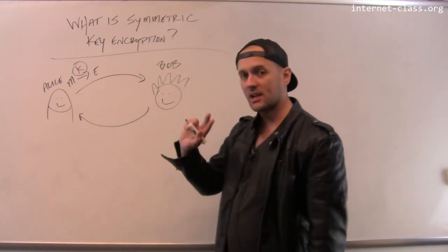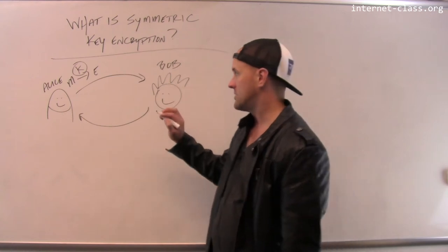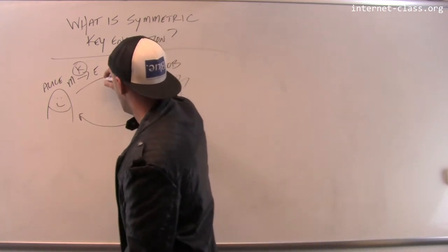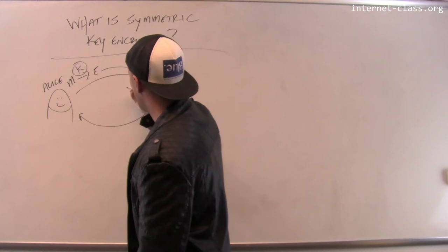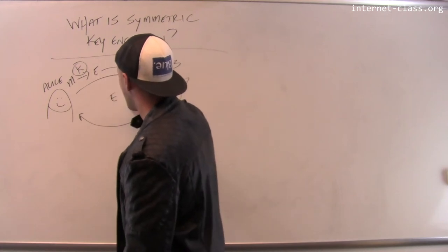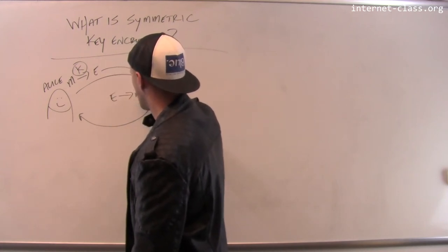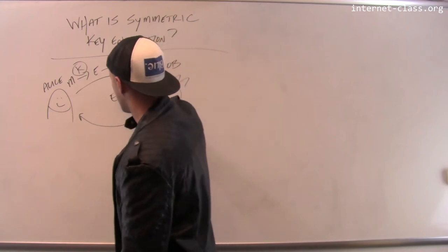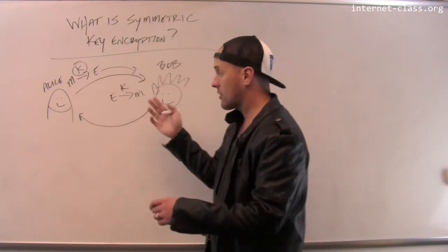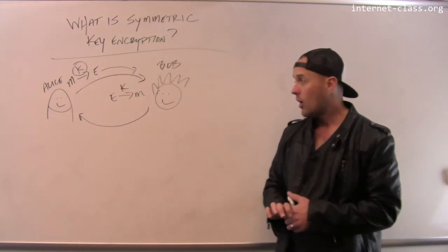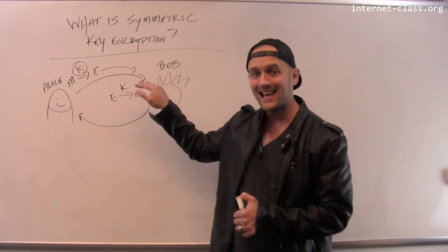But the distinction that we want to draw with symmetric key encryption is when Bob receives the message, so she's going to transmit this message E to Bob. When Bob receives the message, he performs a transform to recover the original contents. And the transform, the decryption process that he performs also uses the same key K.